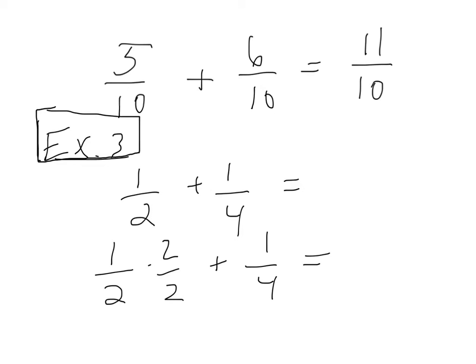So once again to get the lowest common denominator we can multiply the fraction 1/2 by 2/2 and leave 1/4 knowing that it already has the common denominator of 4.